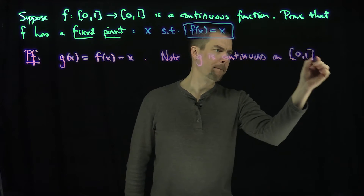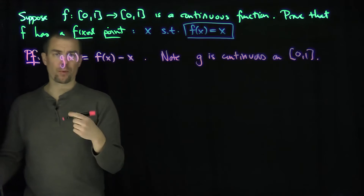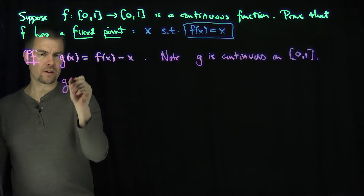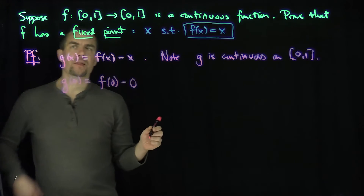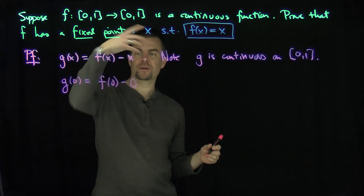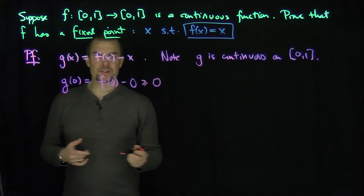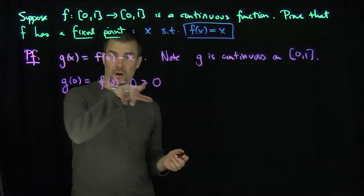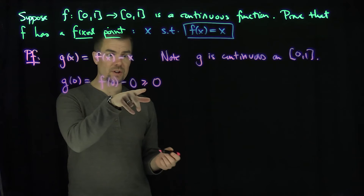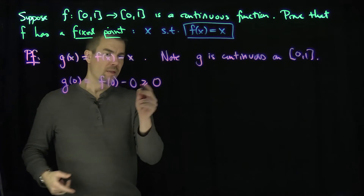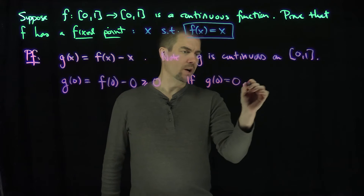g is continuous on the closed interval zero one. Now let's examine g at the endpoints. g of zero is f of zero minus zero. Since f maps zero one into zero one, this is greater than or equal to zero. The first case is if g of zero equals zero — we'd be done, because that would say that f of zero is equal to zero.